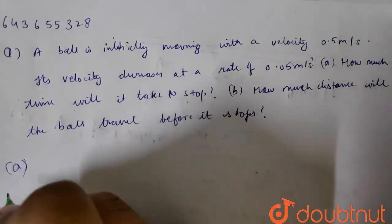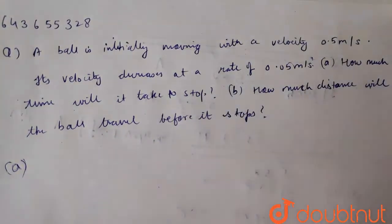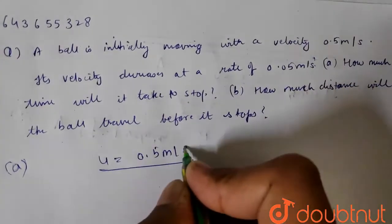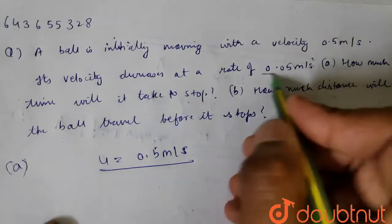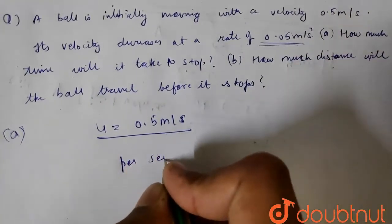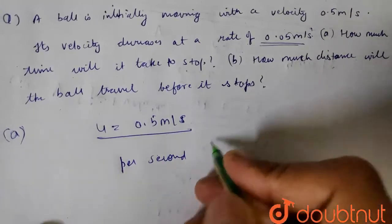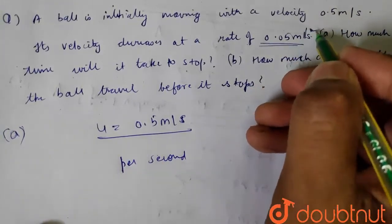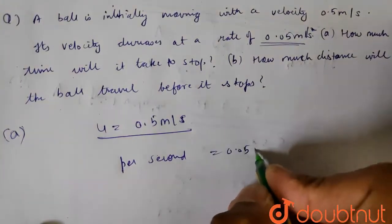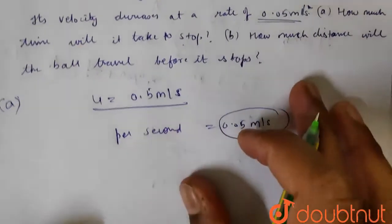Okay, so its initial velocity is 0.5 meter per second, and its velocity rate is - how much time will it take? 0.05 meter per second. Per second, I will tell you per second. It is how much meter per second square? Meter per second, okay. So per second it is how much? The drop is 0.05. Its velocity is decreasing.